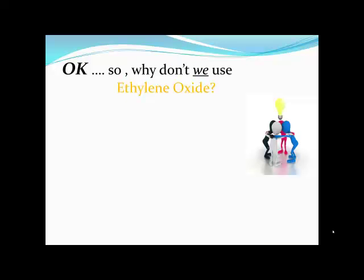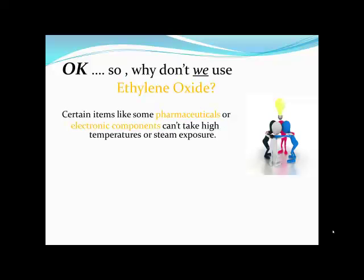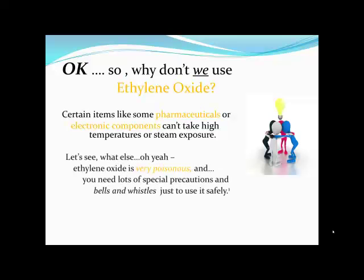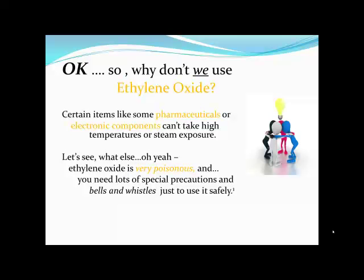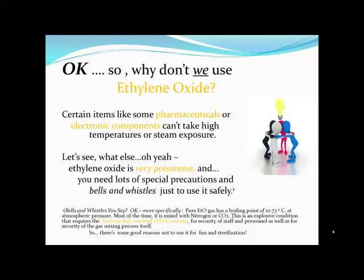So why don't we use ethylene oxide? Well, certain items like pharmaceuticals or electronic components can't take high temperatures or steam exposure. But also, ethylene oxide is very poisonous, and you need lots of special precautions just to use it safely. More specifically, ethylene oxide has a boiling point of 10.73 degrees Celsius at atmospheric pressure. Mixed with nitrogen or carbon dioxide, this is an explosive condition that requires intrinsic safe material zoning for the security of staff and personnel, as well as for the gas mixing process itself. So there are some good reasons not to use it.